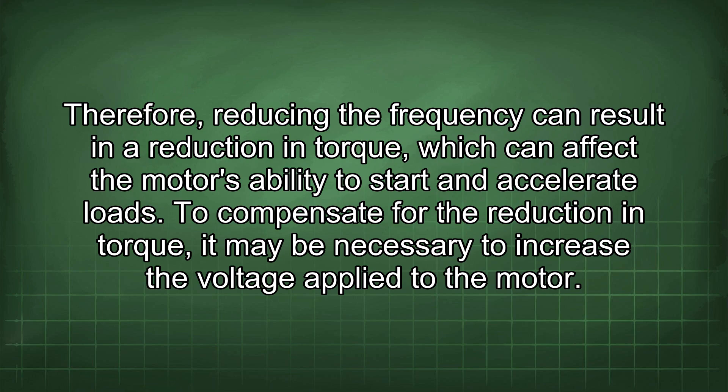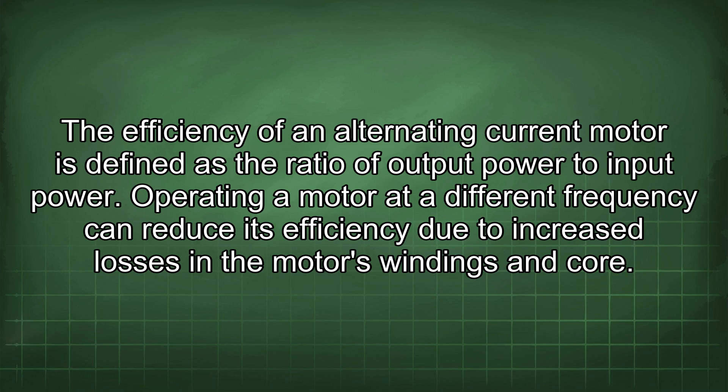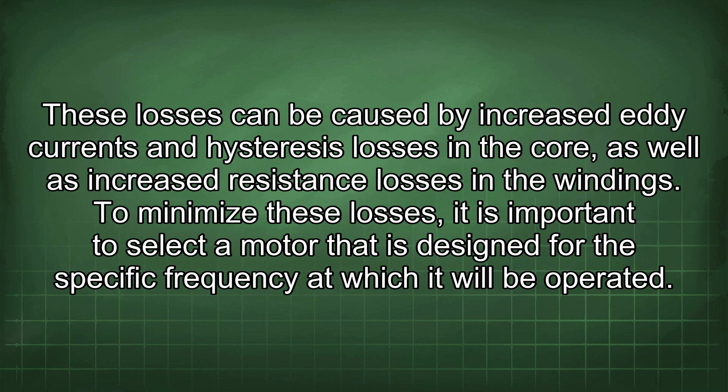To compensate for the reduction in torque, it may be necessary to increase the voltage applied to the motor. However, it is important to ensure that the voltage does not exceed the motor's rated voltage, as this can lead to overheating and damage. In addition to effects on motor speed and torque, operating a motor at a different frequency than its rated frequency can also affect its efficiency. The efficiency of an AC motor is defined as the ratio of output power to input power. Operating a motor at a different frequency can reduce efficiency due to increased losses in the motor's windings and core, caused by increased eddy currents, hysteresis losses, and increased resistance losses. To minimize these losses, it is important to select a motor designed for the specific frequency at which it will be operated.